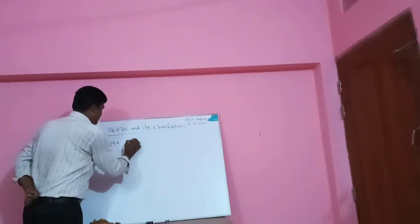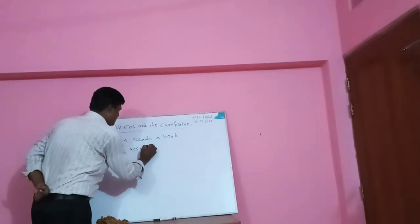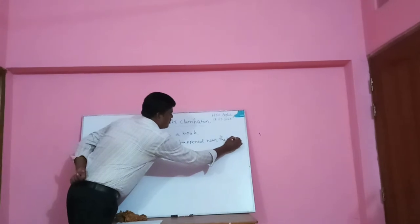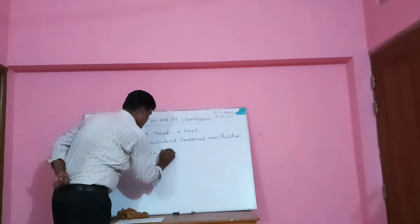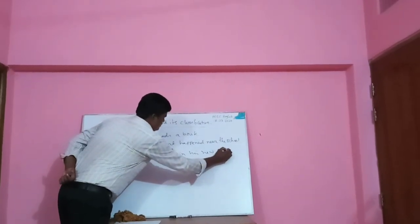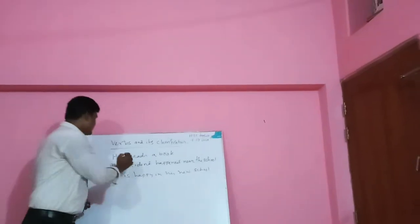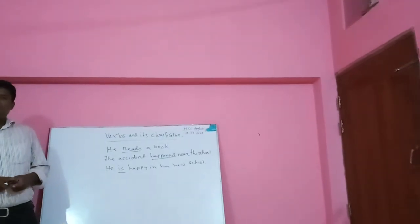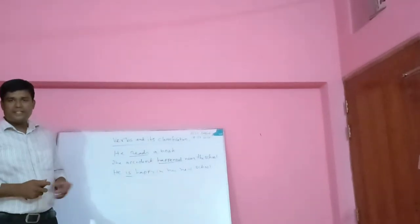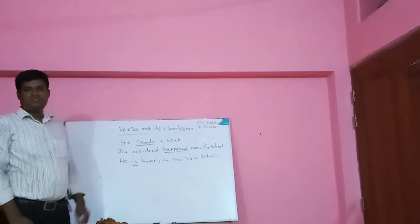In the first sentence: 'He read the book.' Dear students, follow the example. In the first sentence, the word 'reads' shows the person — he does something, that is, he reads a book. So that sentence tells about an action, so 'reads' is the verb.